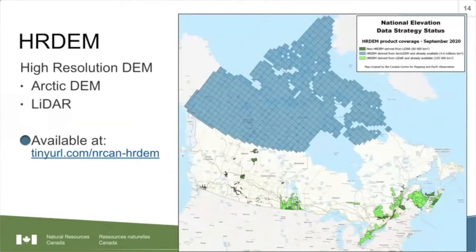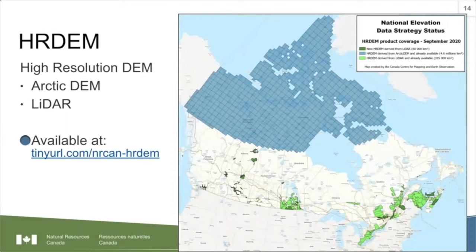A primary input to flood hazard mapping is a digital elevation model describing the terrain. We're modernizing our digital elevation model by developing a high-resolution DEM as part of the CAN elevation series under the national elevation strategy. In northern Canada, we worked with Arctic nations to create a digital surface model at about two-metre resolution. In the south, below the productive forest line, we're creating digital terrain surface models and other derived datasets from airborne LiDAR data at one or two metre resolution, available for download by searching HRDEM and NRCan.